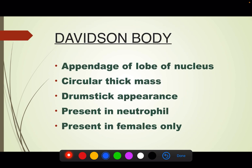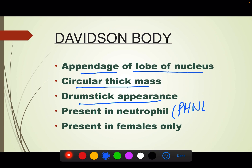Davidson body is the appendage of the lobe of the nucleus. It is a circular thick mass with drumstick appearance and it is present in neutrophils — that is, polymorphonuclear leukocytes (PMNL). It is present only in females.